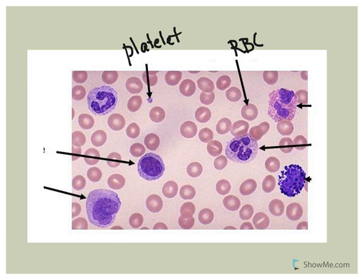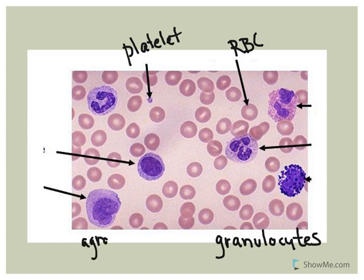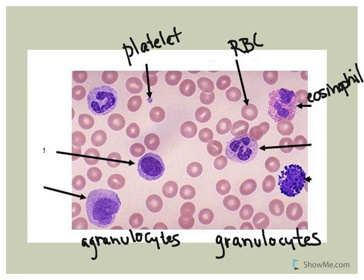What we're going to do first is discuss the cells referred to as granulocytes. Granulocytes have granules in their cytoplasm that stain, so they're visible. The granulocytes will be the eosinophil, the neutrophil, and the basophils — while the agranulocytes lack these granules.